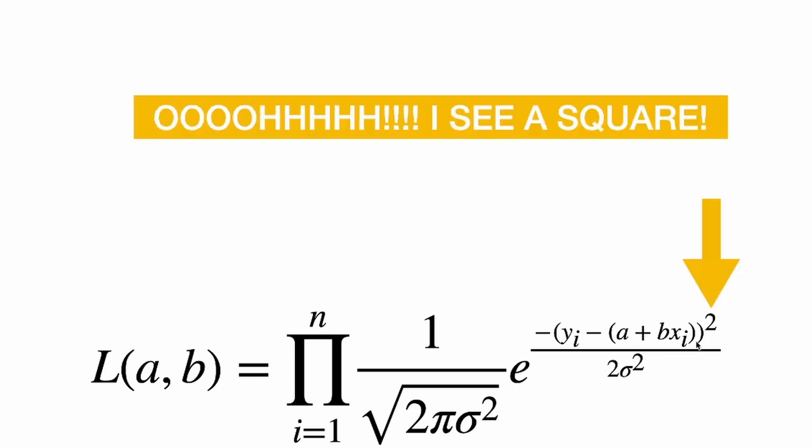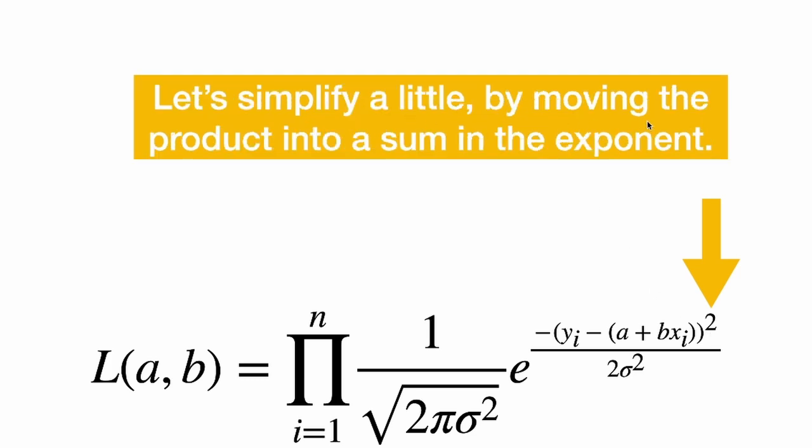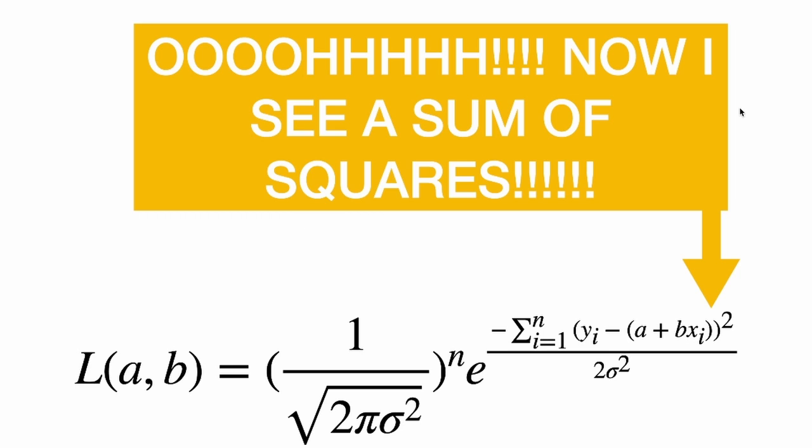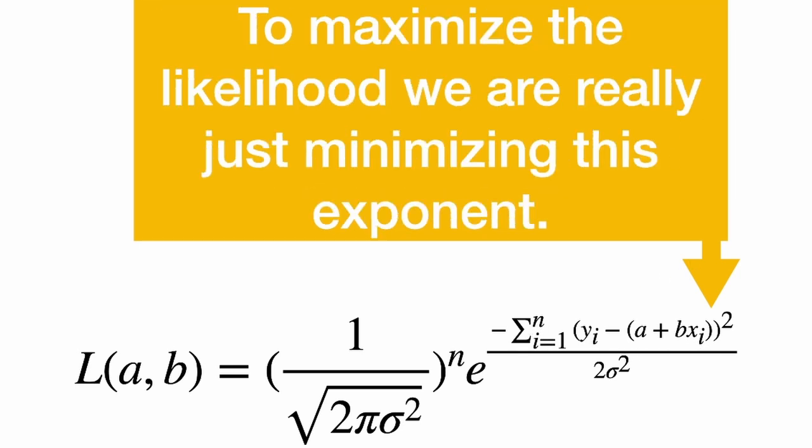So how do we maximize this function? Well, I see a square in this function. Now let's simplify a little bit by moving the product into a sum in the exponent. So when I multiply all these things, this exponent is now going to have a sum in it. So now I see a sum of squares.